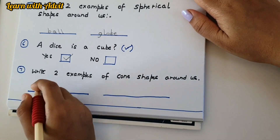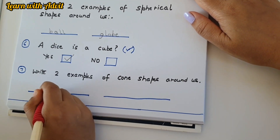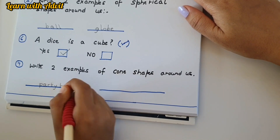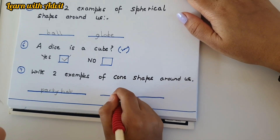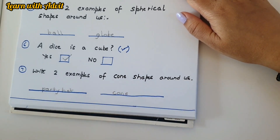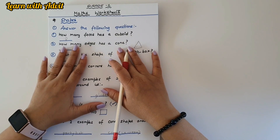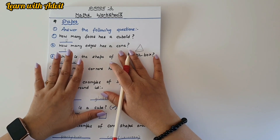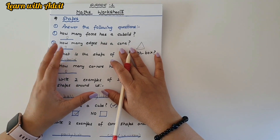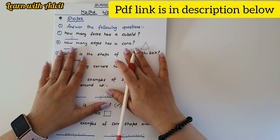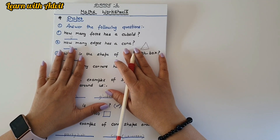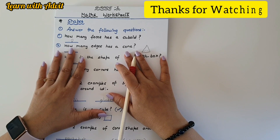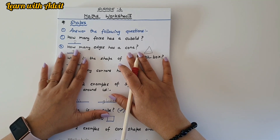Write two examples of cone shapes around us. It could be a party hat for birthdays, and also an ice cream cone — all kids' favorite! I hope you like this worksheet. These worksheets are really good for Grade 1 kids — 6 to 8 year olds. You can use them on a daily practice basis so they can revise all topics. If you want to download this worksheet, I'll provide the link in the description below. For more such learning videos, please like, share, and subscribe to our channel — Learn with Advil. Thanks for watching! See you in the next video. Bye bye!